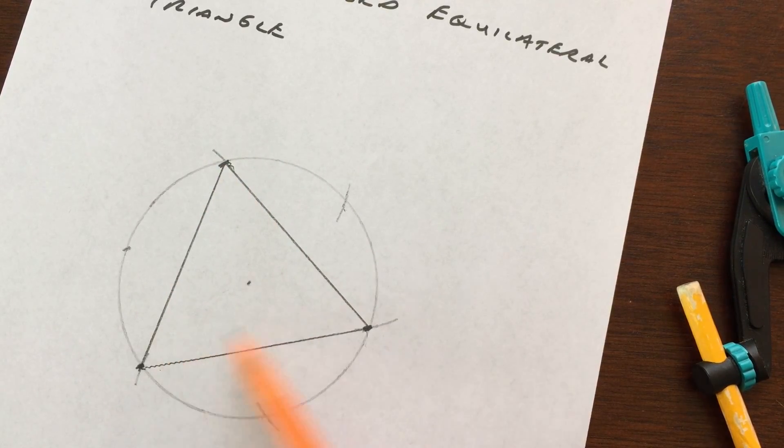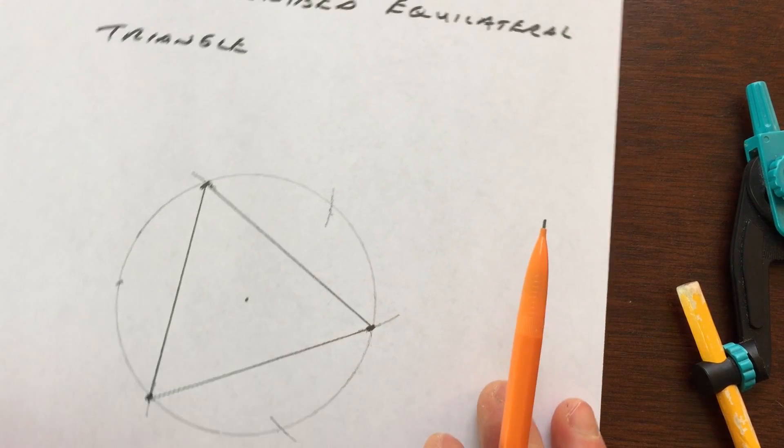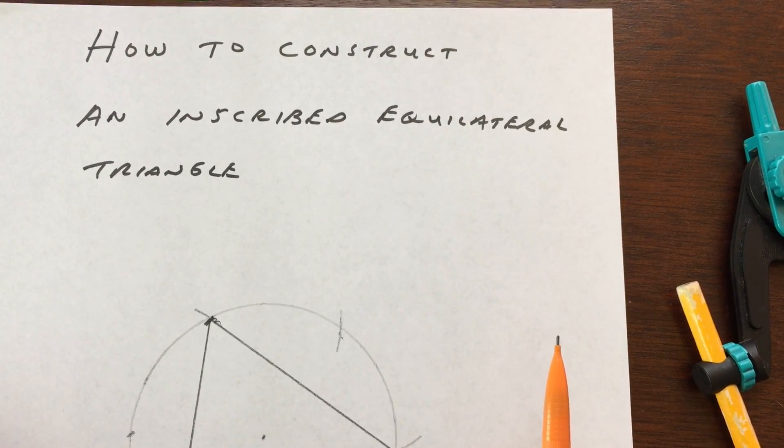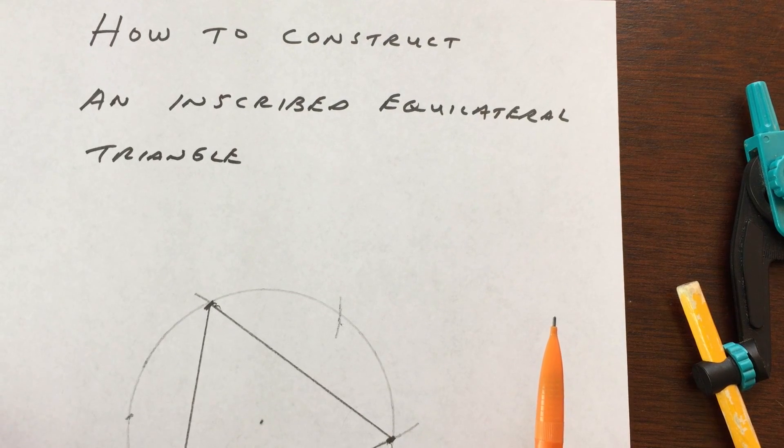It's also going to be equiangular. All these angles are going to be 60 degrees, so they all add up to 180. So that's how you construct an inscribed equilateral triangle. I hope you enjoyed this video. Subscribe to the channel and check out more constructions on my YouTube channel, Mario's Math Tutoring. I look forward to seeing you in future videos.